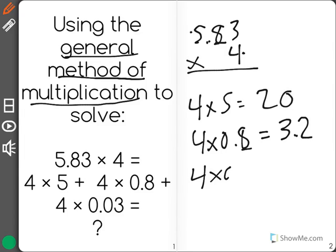And the last is 4 times 0.03. Again, we have 4 here and 0.03. 4 times 3 is 12, but we have two numbers after the decimal, so I need two numbers after as well.